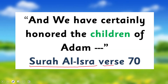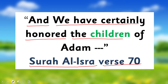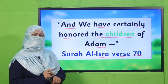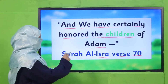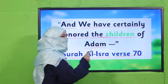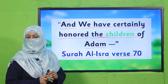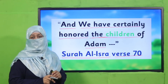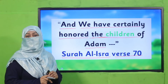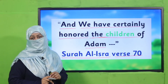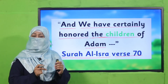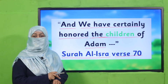Let's start with the name of Allah Subhanahu wa Ta'ala. Allah mentions in the Quran, Surah Al-Isra, verse 70: 'And we have certainly honored the children of Adam.' Allah is talking about the children of Adam — and who are the children of Adam? We are, alhamdulillah. So Allah is talking about human beings; Allah has honored human beings.